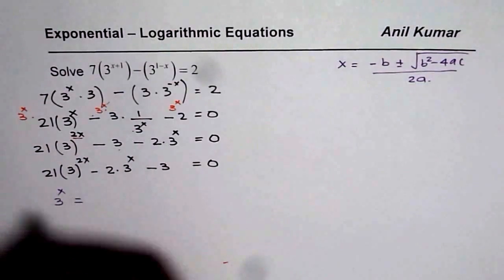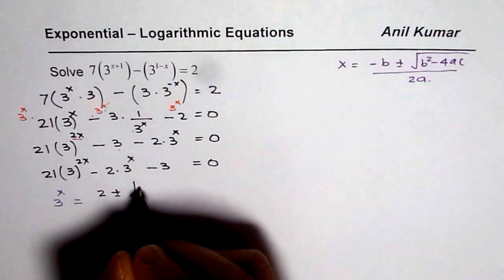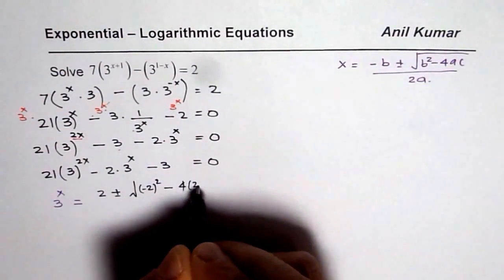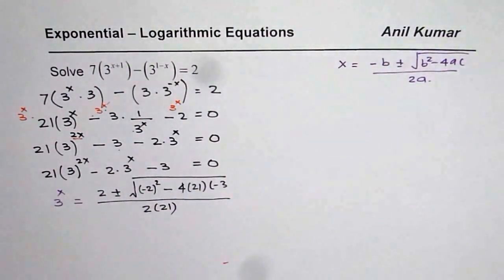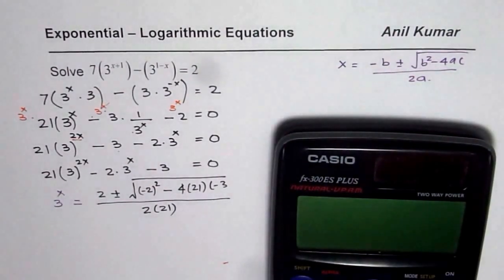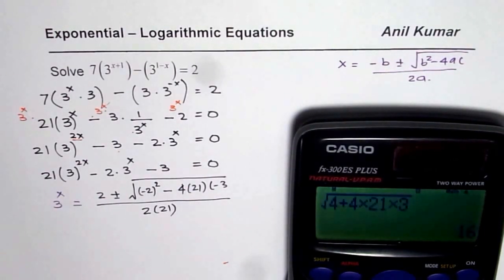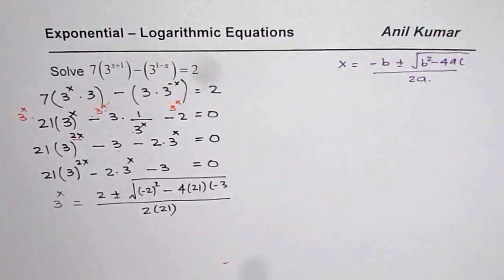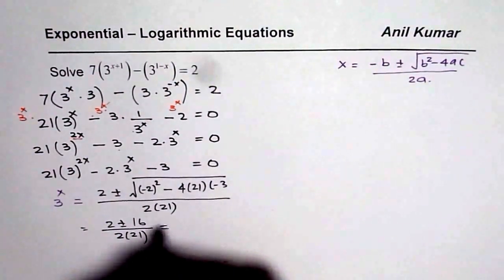So we can write 3 to the power of x equals minus of minus 2, which is 2, plus or minus square root of b squared — which is minus 2 squared — minus 4 times 21 times minus 3, all divided by 2 times 21. Now let us calculate what we have within the square root: 2 squared is 4, and minus times minus becomes plus, so we add 4 times 21 times 3, giving 256, and the square root of 256 is 16.